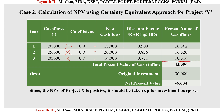Adding the present values for all three years gives a total of 43,396. We subtract the original investment of 50,000 from this total present value. Once we subtract, we get the Net Present Value — and in Case 2 the net present value is negative: minus 6,604. The decision rule says whichever project is positive has to be selected for investment. In this Certainty Equivalent Approach, project X is positive, so this organization has to consider project X for investment. They should not consider project Y because it has a negative value.